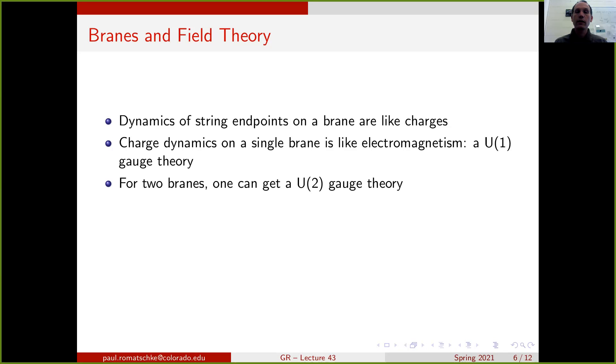If we have two branes, one can engineer a U(2) gauge theory. For three branes, we get U(3). And for N of these branes, where N is some number, we get a U(N) gauge theory. U(N) gauge theory contains an SU(N) gauge theory as part of their setup.